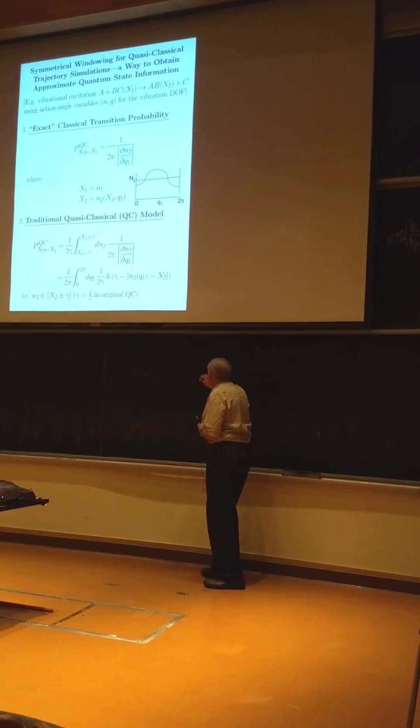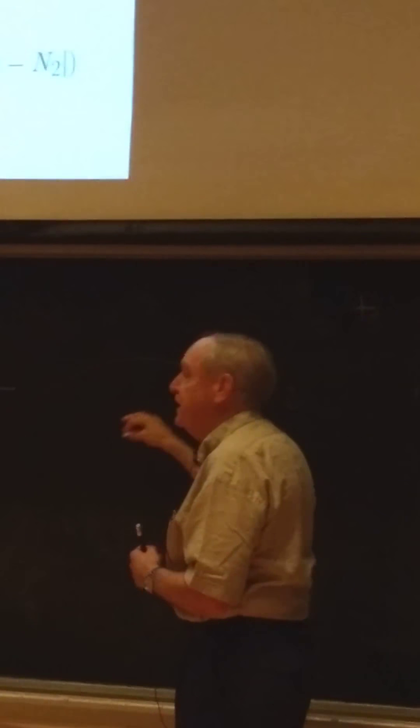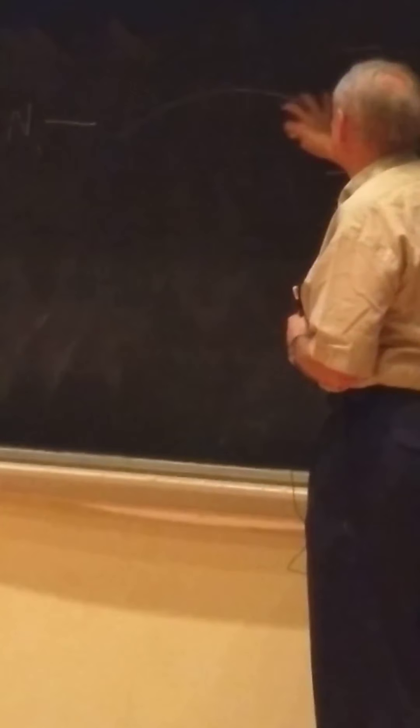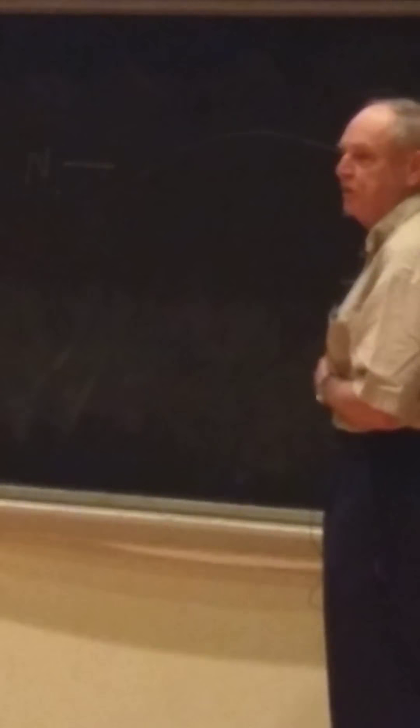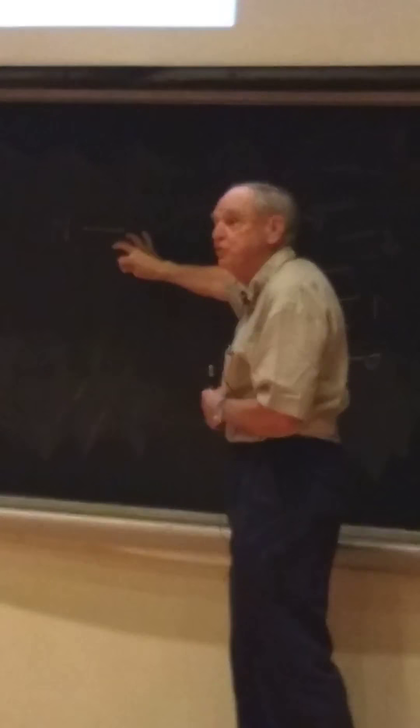So you choose 1,000 values of these, and in the old days, this is exactly what people were doing actually when I was a beginner graduate student, before my time. They would begin trajectories at an integer value of the action. They'd run them. It wouldn't end up as an integer, but they just had a little set of boxes or bins around box zero, around one.